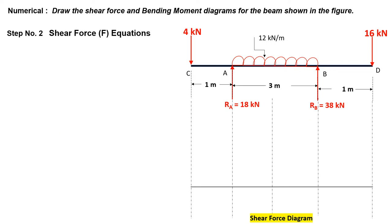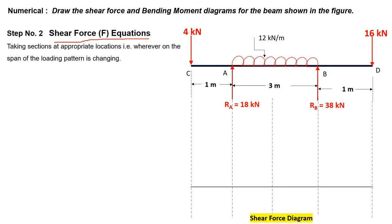Next, step two is to develop equations for shear force. We have to take different sections based on loading changes. Between D and B there is no change in load, so one section there. Then a section between B and A where UDL acts, and another between A and C. So we take sections DB, BA, and AC respectively.